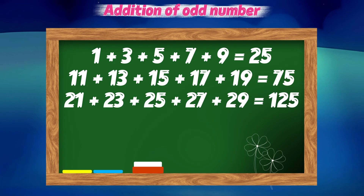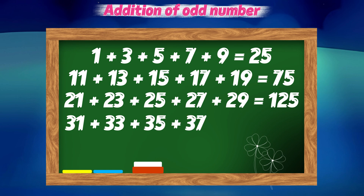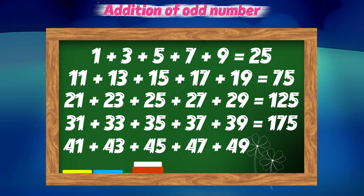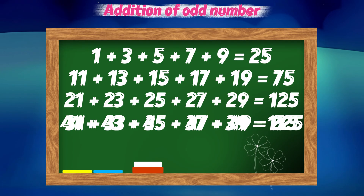31 plus 33 plus 35 plus 37 plus 39 equals 175. 41 plus 43 plus 45 plus 47 plus 49 equals 225.